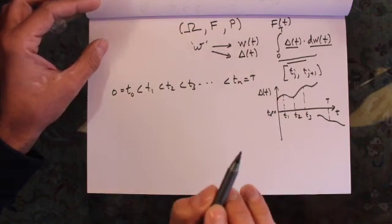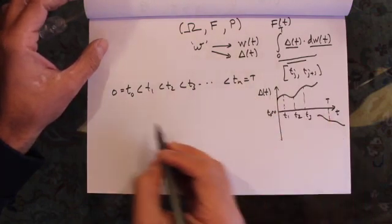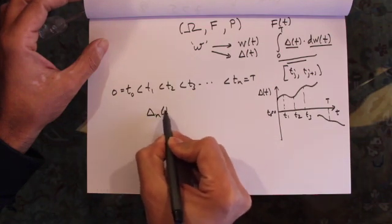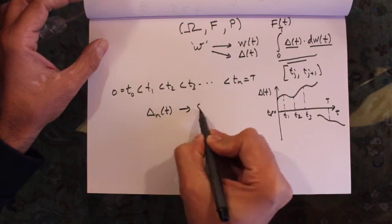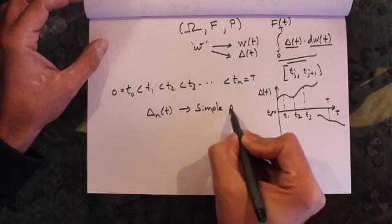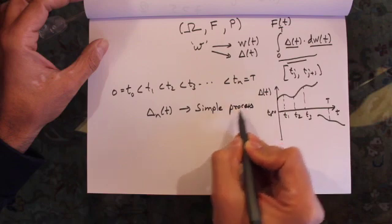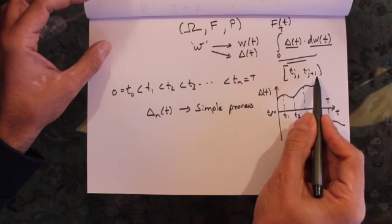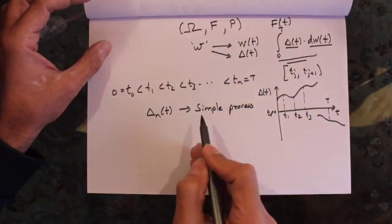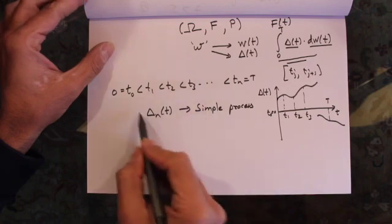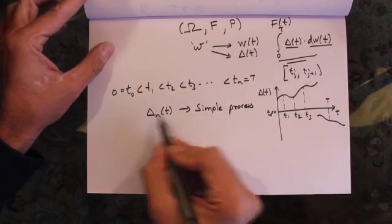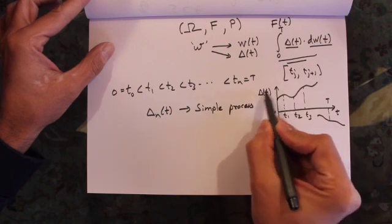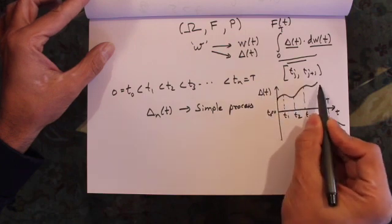Now what we want to do is we want to come up with an approximation for this continuous process. And how we're going to approximate this continuous process is we're going to use a simple process. Simple process, if you remember, let's denote the simple process as delta_n of t. This is basically the simple process. And simple process we basically mean that between any time step t_j and t_j plus 1, this process will be constant. And what we'll do is we'll set the value of this process during any time interval equal to the value of the process that we're trying to approximate.